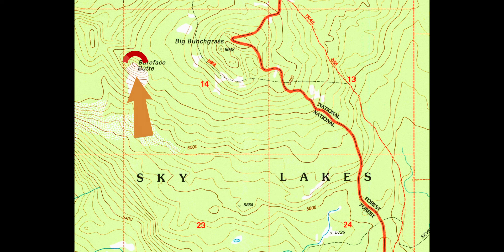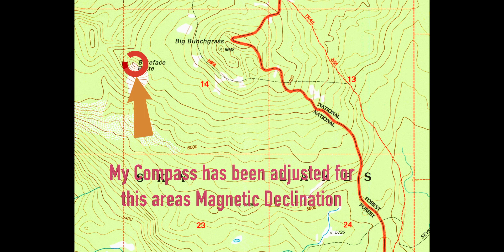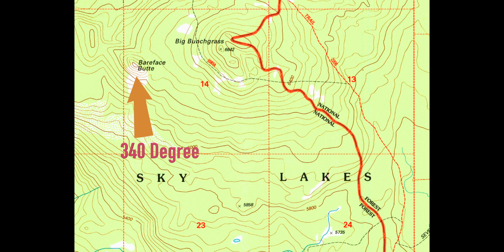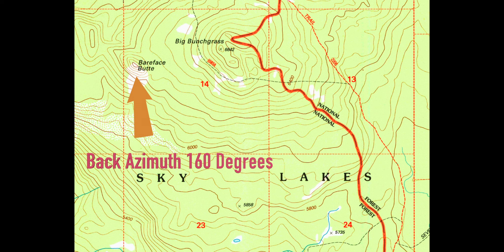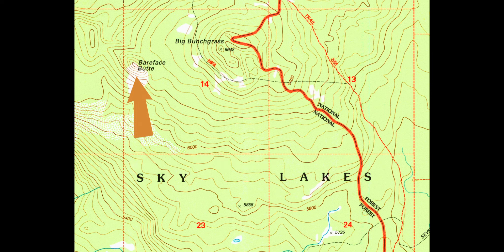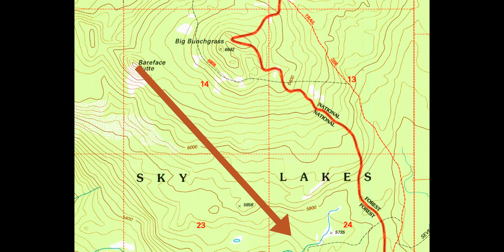I take my compass — which is already adjusted for magnetic declination — and I shoot an azimuth to my first hilltop, and that azimuth is 340 degrees. I need to convert that to a back azimuth, which is 160 degrees. So from that hilltop I'll take a straight edge and draw a line on a 160 degree azimuth.